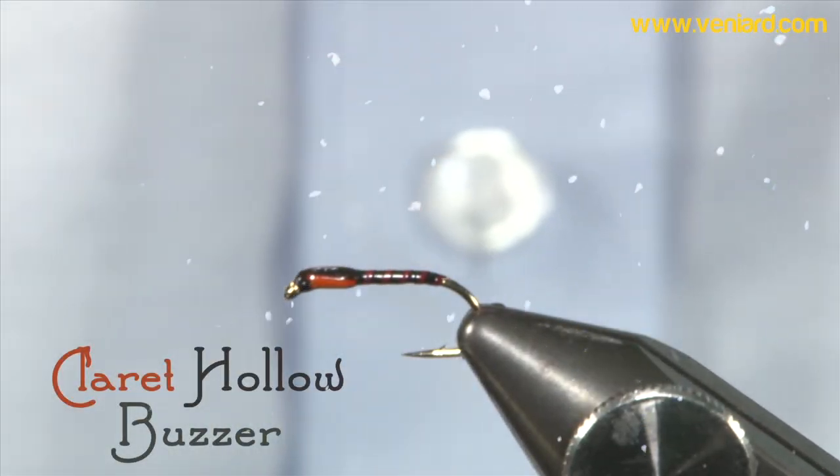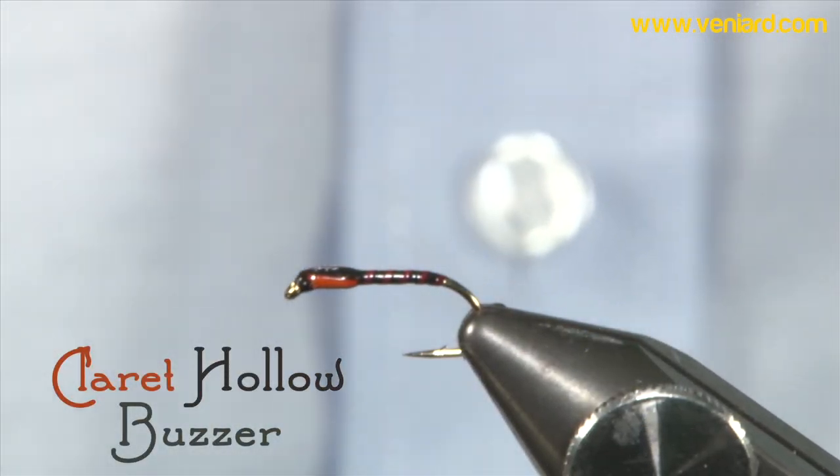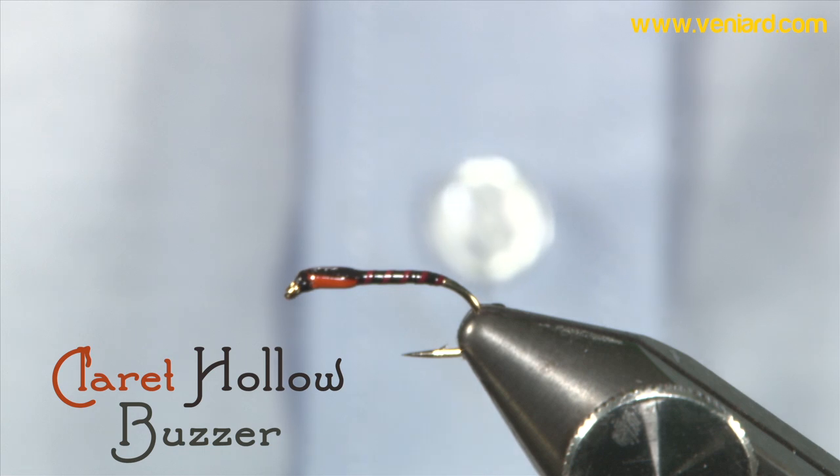This is the Claret Hollow Buzzer. Simple to tie but you can get it wrong by making things bulky. Keep it nice and slim, get the profile perfect.